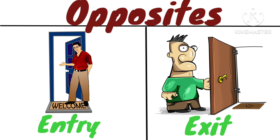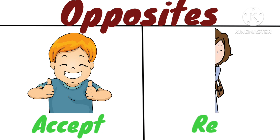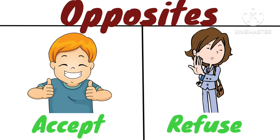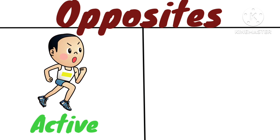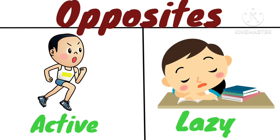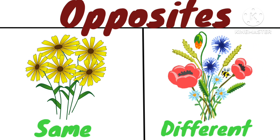Opposite of entry is exit. This is an entry door, and this is an exit door. Opposite of accept is refuse. The boy accepted the invitation, and the girl refused the invitation. Opposite of active is lazy — active boy, lazy boy.